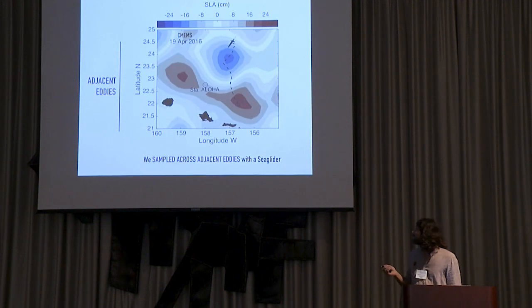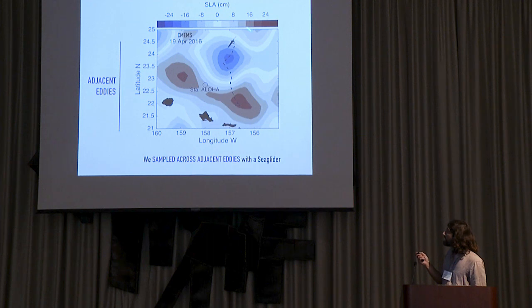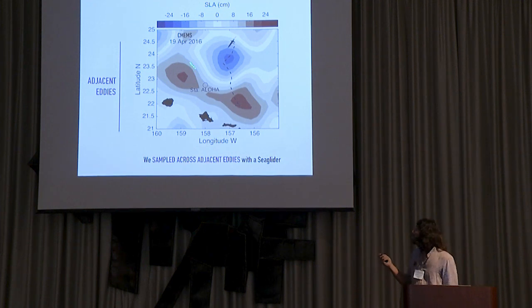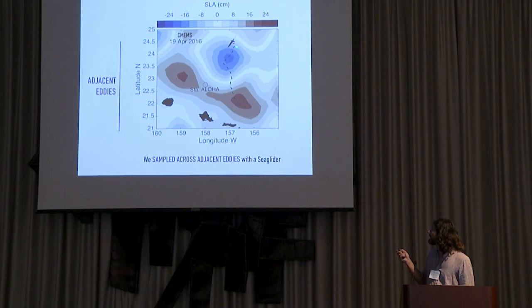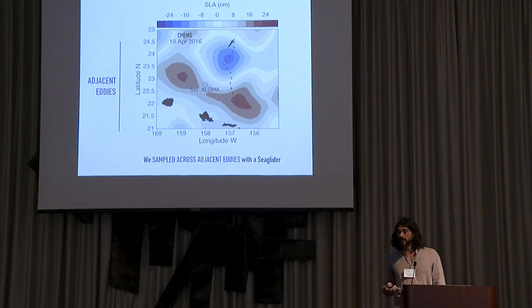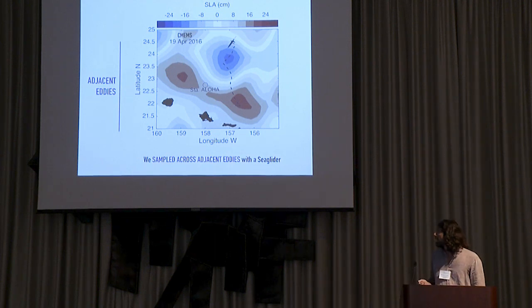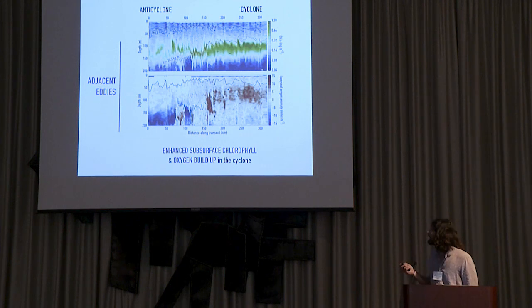This is an example from 2016. What I'm showing in this map north of Hawaii is the height of the sea surface. The red region has elevated sea surface, the blue region has depressed sea surface. This is a cyclone and this is an anticyclone. This dashed line is the trajectory of the glider sampling across these eddies. It's very interesting what we measured. These are contour plots. On the y-axis, depth. On the x-axis, distance along this transect.